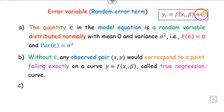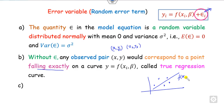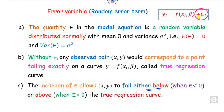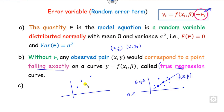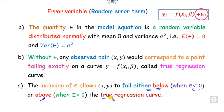If epsilon is 0, then for each pair (x₁,y₁), (x₂,y₂), all points fall exactly on the curve — this is the true regression curve. However, if the line does not pass through the points, epsilon is non-zero. Points fall below the curve when epsilon < 0 and above the curve when epsilon > 0.